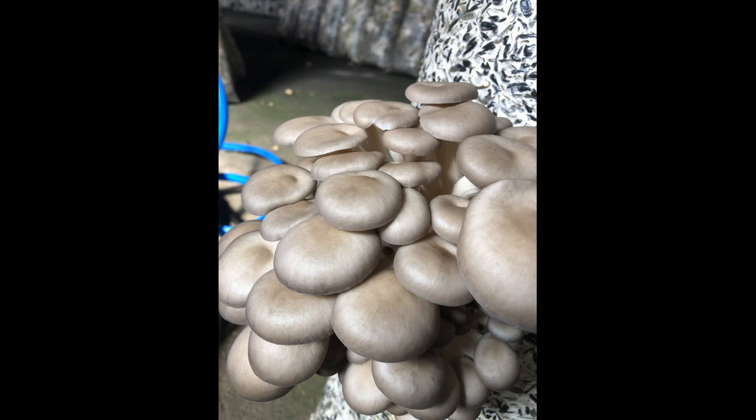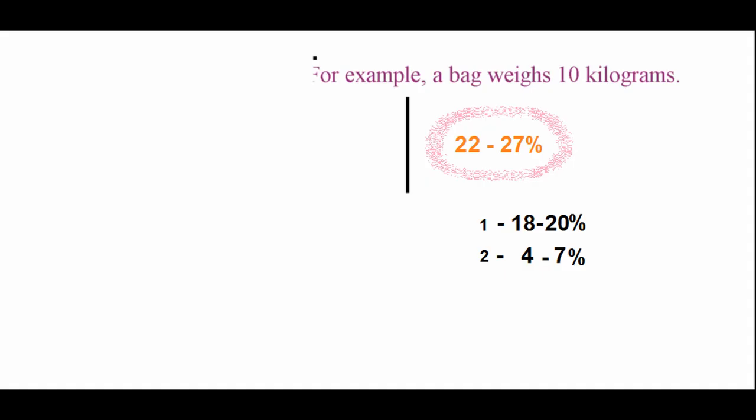The easiest term is the yield of oyster mushrooms per bag. Everything is simple: we have a bag of a certain weight and we collect a certain weight of mushrooms from it. For example, a bag weighs 10 kilograms. From the first flush it is possible to collect about 2 kilograms of mushrooms, plus or minus 200 grams. That is, the yield per bag from the first flush ranges from 18 to 22 percent.